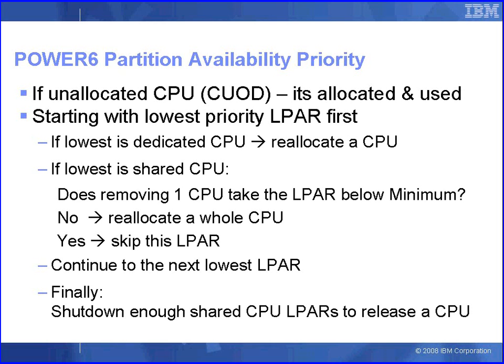So we've assigned the priorities to our logical partitions. How does this help the hypervisor decide what to do when we have a CPU failure? Well, if we have an unallocated CPU — a capacity upgrade on demand type CPU — we can immediately allocate that and use it. If we haven't got one of those, then we start with the lowest priority logical partition first. If that's a dedicated CPU partition, we will dynamically take a CPU out of it or shut it down if necessary. If the lowest priority logical partition has a shared CPU, then what happens depends on whether taking a whole CPU out of that partition takes it below its minimum. If no, we go ahead; if yes, we skip it and continue on to the next lowest.